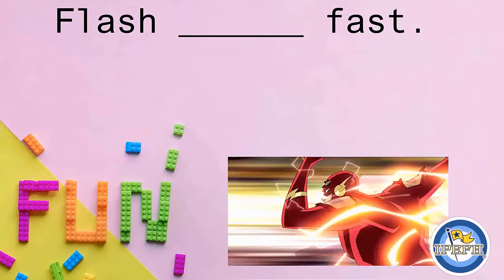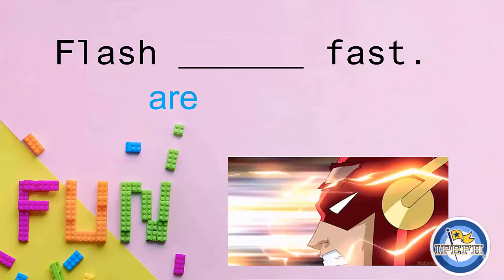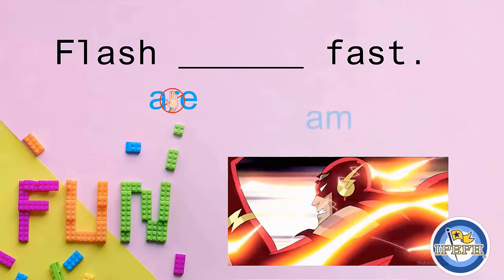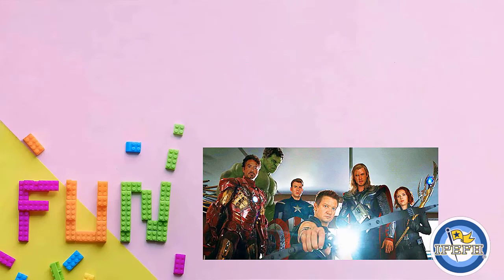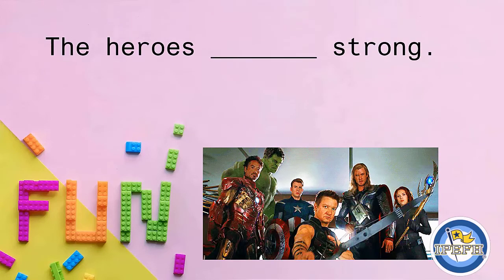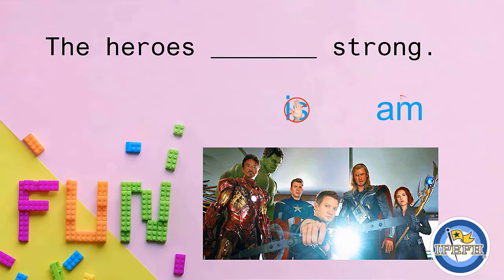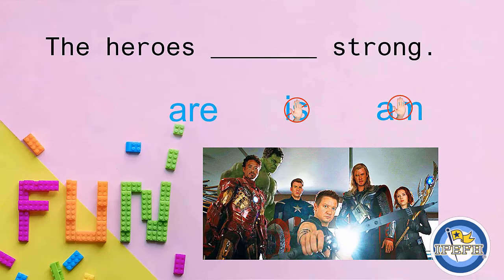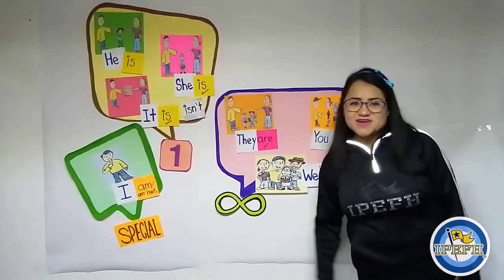Then we have Flash. Flash is a boy, so Flash is in the bubble for 'is.' 'Flash are fast'? No. 'Flash am fast'? Incorrect. 'Flash is fast' — this is the correct answer. Then we have the heroes. As you can see, we have a lot of heroes in this picture. 'The heroes is strong'? Incorrect. 'The heroes am strong'? Incorrect. 'The heroes are strong' is the correct answer. Thank you very much. See you next time. Bye bye!